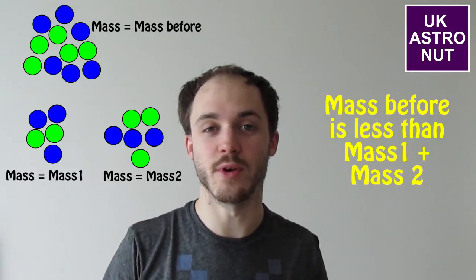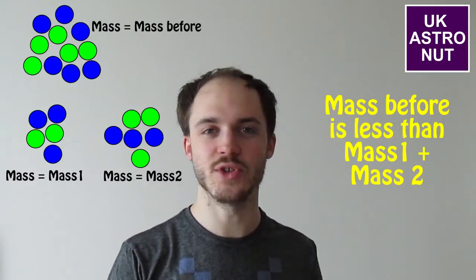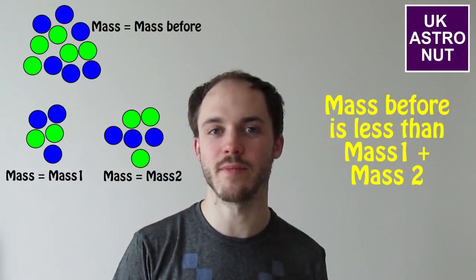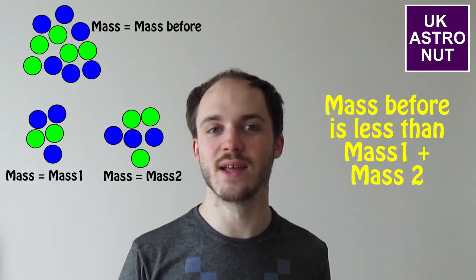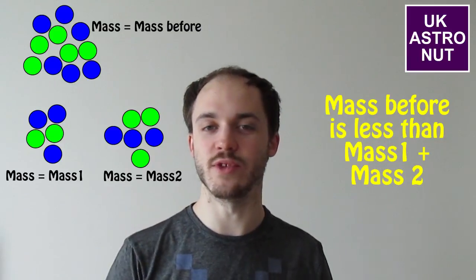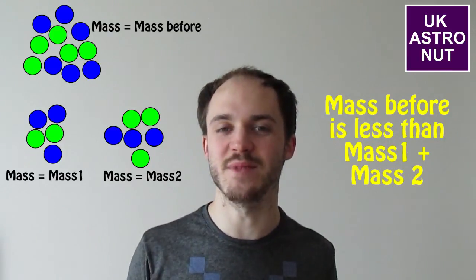But how do we know this is true? If you measure the mass of the atom before it's broken apart, you'll find it's slightly less than the combined masses of the two particles afterwards. This is because as the energy is released, the mass also increases of the two particles, by E equals mc squared.